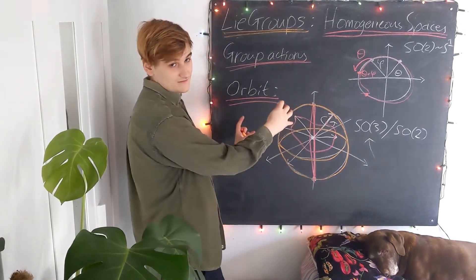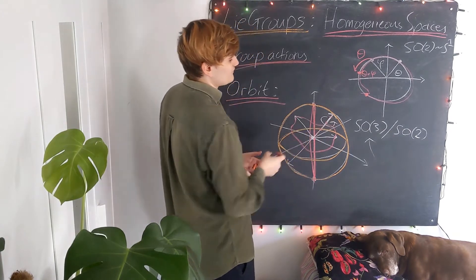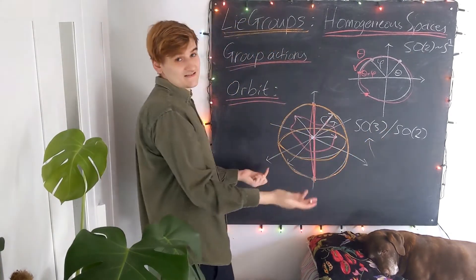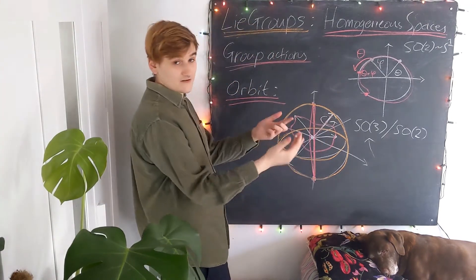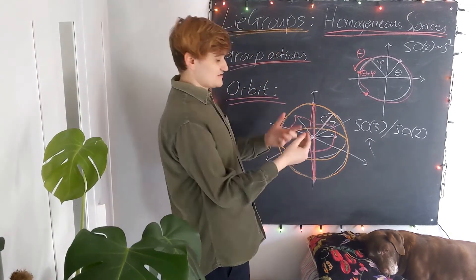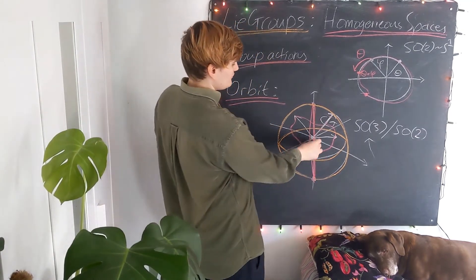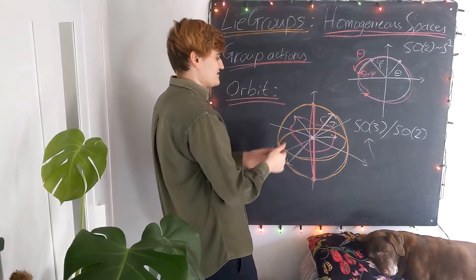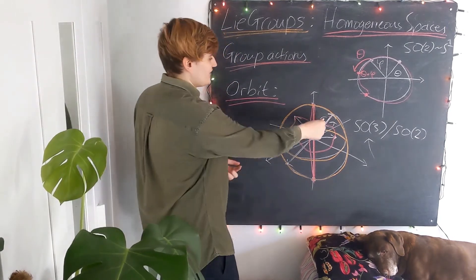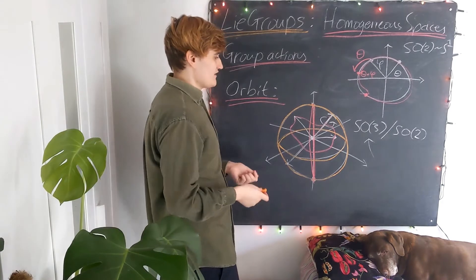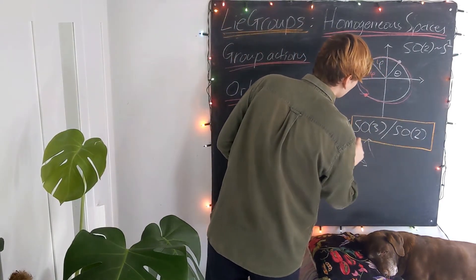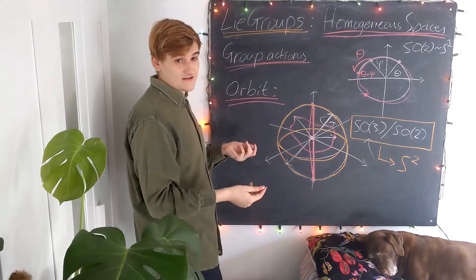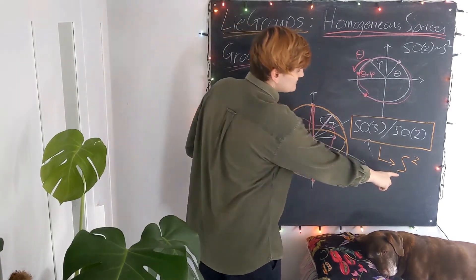Taking all possible rotations — this solid ball — we realize that any vector's points are all equivalent because they differ only by some SO2 rotation. Since all points on the vector are equivalent, we pick any one of them, say the endpoint. Where do all these endpoints of these vectors lie? They lie on the surface of a sphere. So this homogeneous space is equivalent to the surface of the sphere S2.